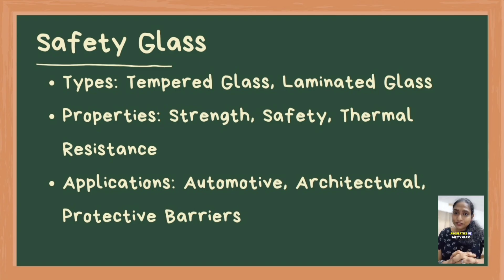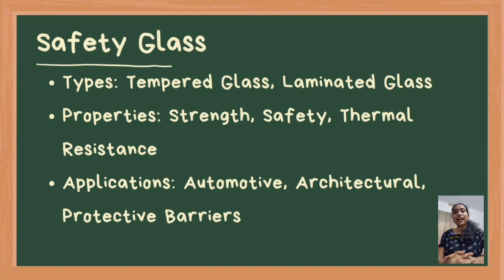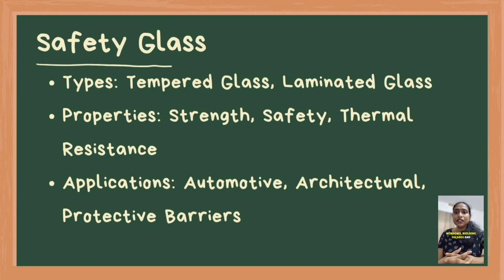Safety glass is designed to reduce the risk of injury upon impact. There are two main types: tempered glass and laminated glass. Tempered glass is produced by heating and rapidly cooling the glass, making it 4–5 times stronger than regular glass and resistant to shattering. Laminated glass consists of two or more layers of glass bonded with a plastic interlayer, which holds the glass together even when broken. This type of glass is often used in automotive windows, building facades, and protective barriers due to its enhanced strength and thermal resistance.